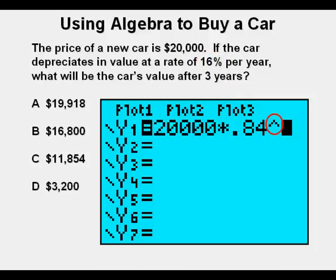Next, we press the to the power of key, or the exponent key, below the clear key on the right side of the keypad. And finally, we press the X key, so we now have the exponential function, 20,000 times .84 to the power of X.